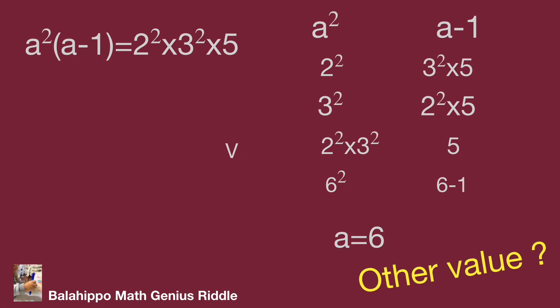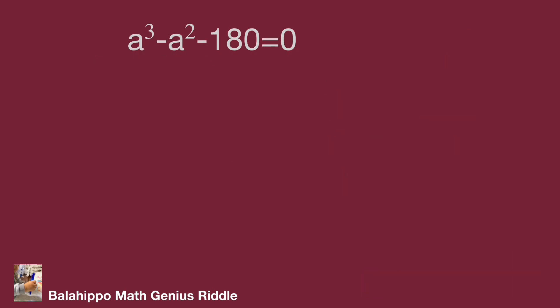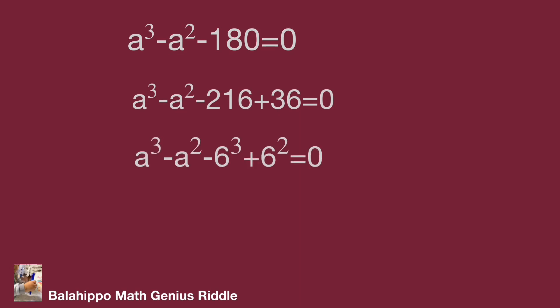Are there other values? Let's go back to the given equation: a³ minus a² minus 180 equals 0. We found a equals 6 is one answer. Adjusting the equation to a³ minus a² minus 216 plus 36 equals 0, the equation becomes a³ minus a² minus 6³ plus 6² equals 0.